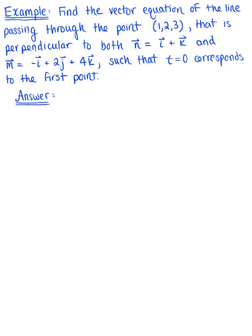Find the vector equation of the line passing through the point (1, 2, 3) that is perpendicular to both vector n, defined by the components i-hat plus k-hat, and vector m, defined by the components minus i-hat plus 2j-hat plus 4k-hat, such that t equals 0 corresponds to the first point.